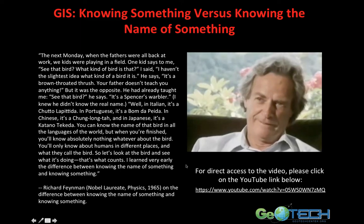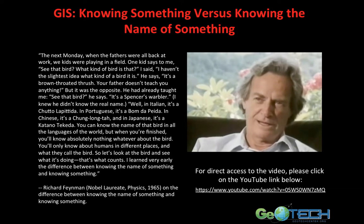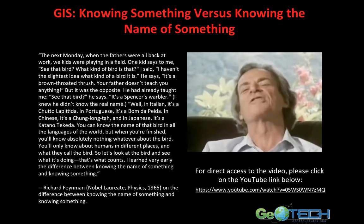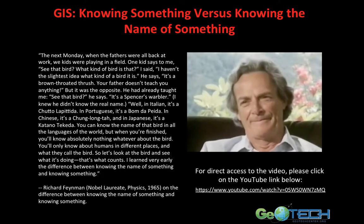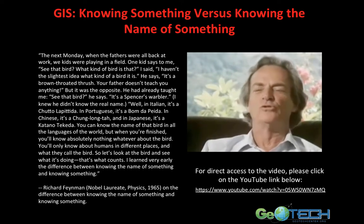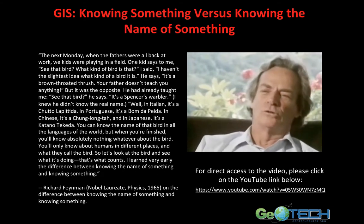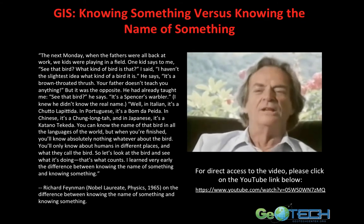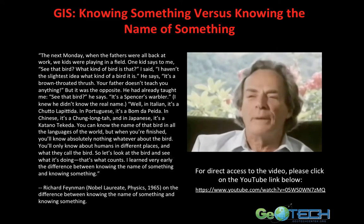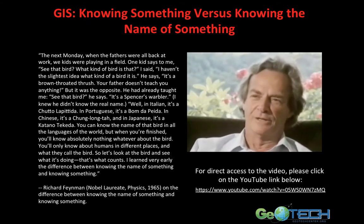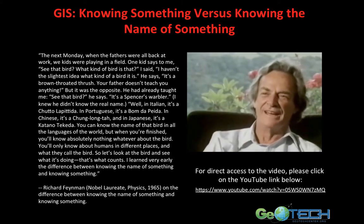All the kids were playing in the field, and one kid said to me, 'See that bird? What kind of bird is that?' I said I hadn't the slightest idea. He said it's a brown-throated thrush, and 'Your father doesn't tell you anything.' But it was the opposite — my father had taught me. He said, 'Do you know what that bird is? It's a brown-throated thrush. But in Portuguese it's this, in Italian it's this, in Chinese, in Japanese.' He said, 'Now you know all the languages, but when you're finished, you'll know absolutely nothing whatever about the bird. You only know about humans in different places and what they call the bird. Now let's look at the bird and what it's doing.' He knew the difference between knowing the name of something and knowing something.